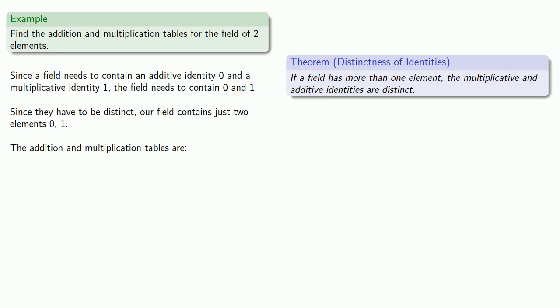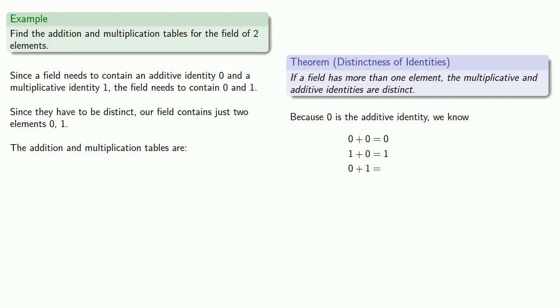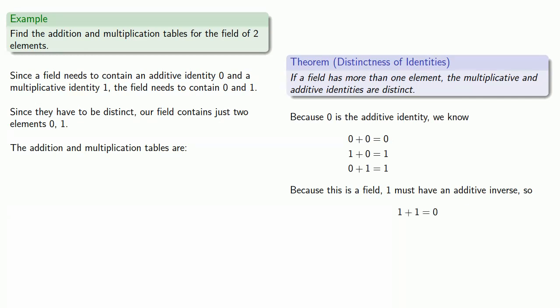Let's produce the addition table. Because 0 is the additive identity, we know that 0 plus 0 is 0, and 1 plus 0 is 1, and 0 plus 1 is 1. Now, because this is a field, 1 must have an additive inverse — we have to add something to 1 to get 0. We've already determined that adding 0 gives 1, not 0. So the only other choice for the additive inverse of 1 is 1 itself, and so we must have 1 plus 1 equals 0.